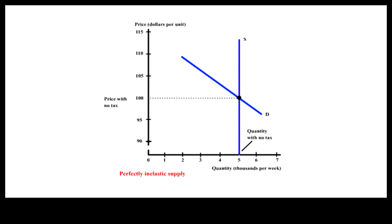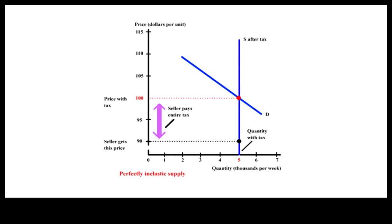When sellers continue to supply the same quantity regardless of prices, the supply curve is a vertical line, indicating perfectly inelastic supply. If demand remains unchanged, the before and after-tax price remains the same — before-tax price equals $100, after-tax price also equals $100. Sellers end up paying the full share of the per-unit sales tax.